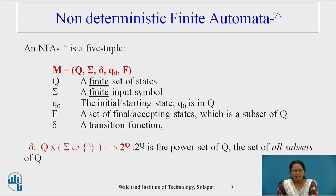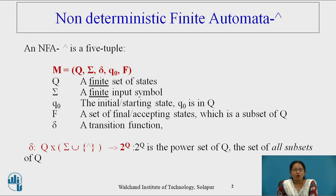The third machine is non-deterministic finite automata with null transition, which is a somewhat extension to non-deterministic finite automata with the null symbol. The machine transits from one state to another without processing anything, or by processing a null string.